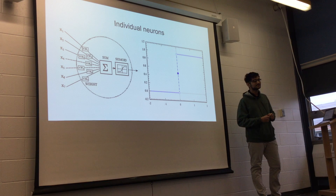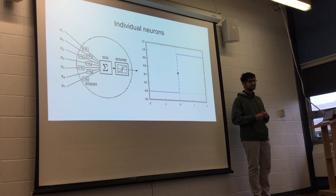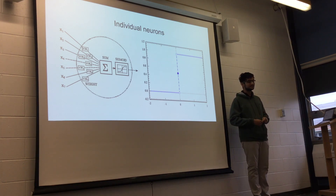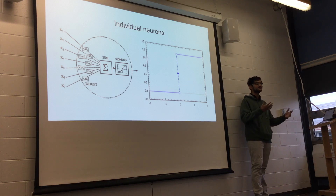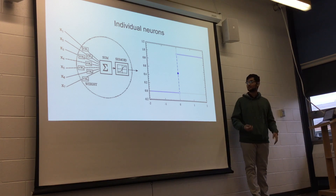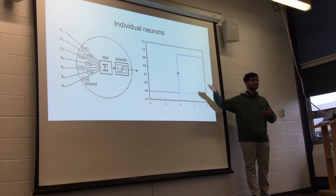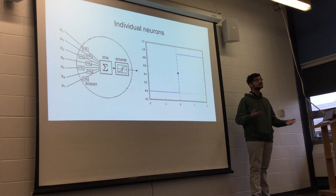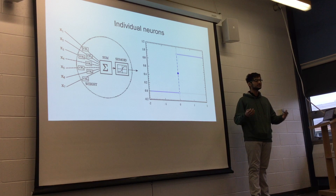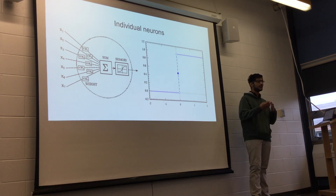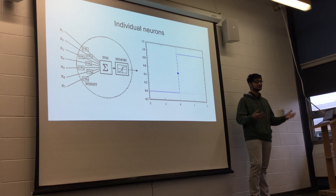Noah answered: neurons take stuff from other neurons and shoot out their own electrical things. So they take in different amounts of electrical signal from different neurons — except instead of electricity, it's numbers. Different neurons are more important to each individual neuron, so it multiplies them all by a weight — one neuron might be times three, another might be times two.